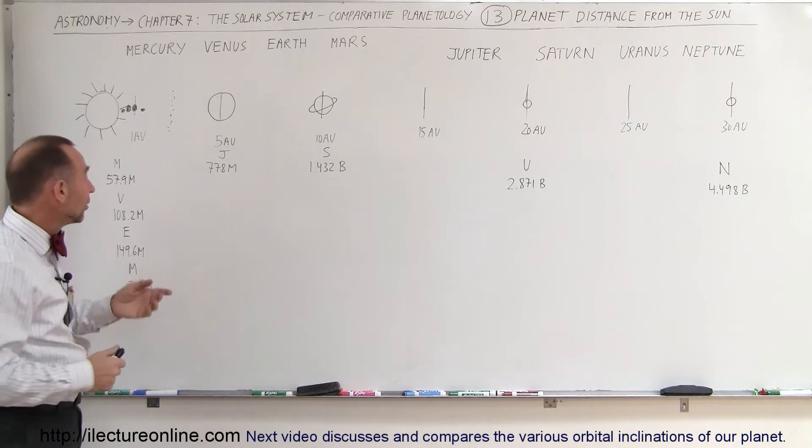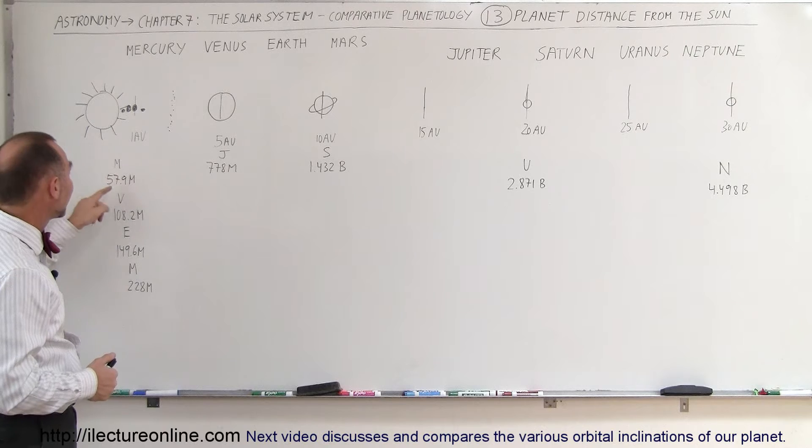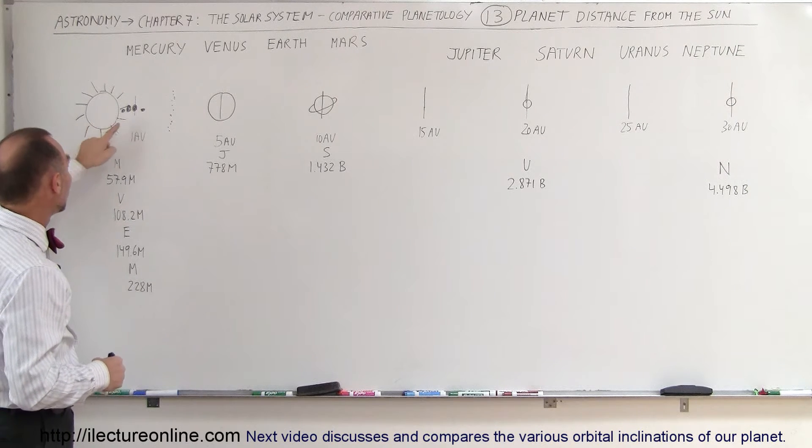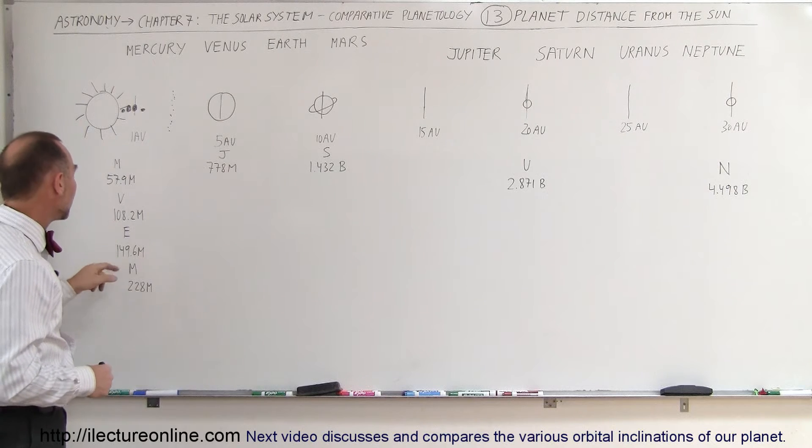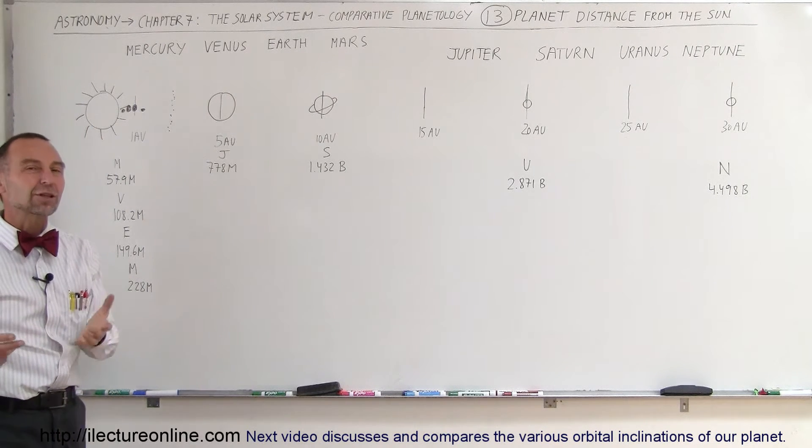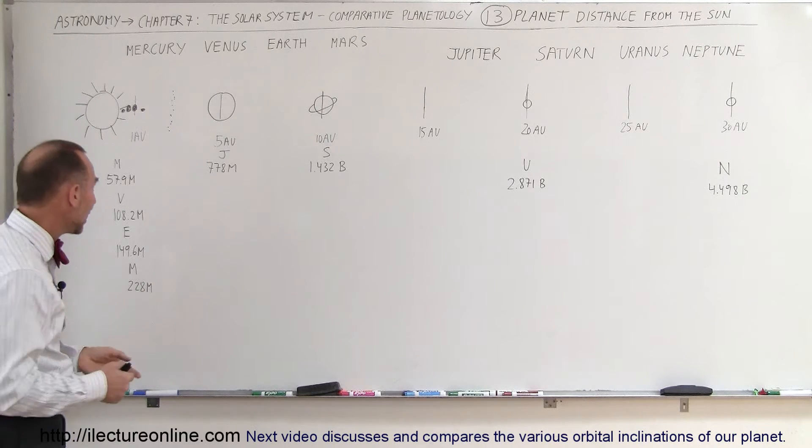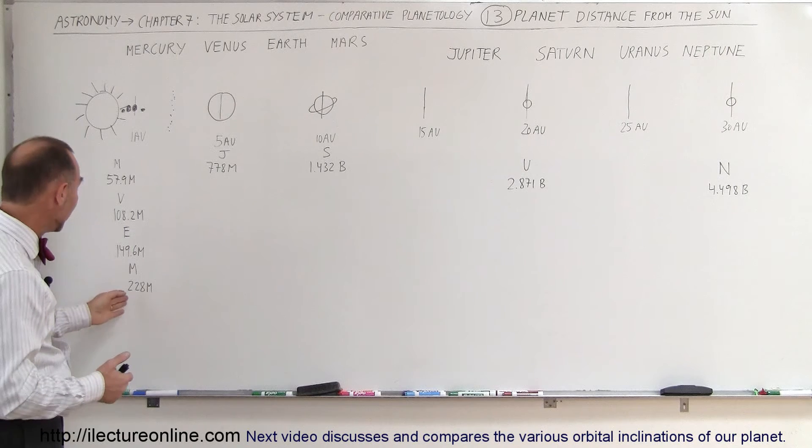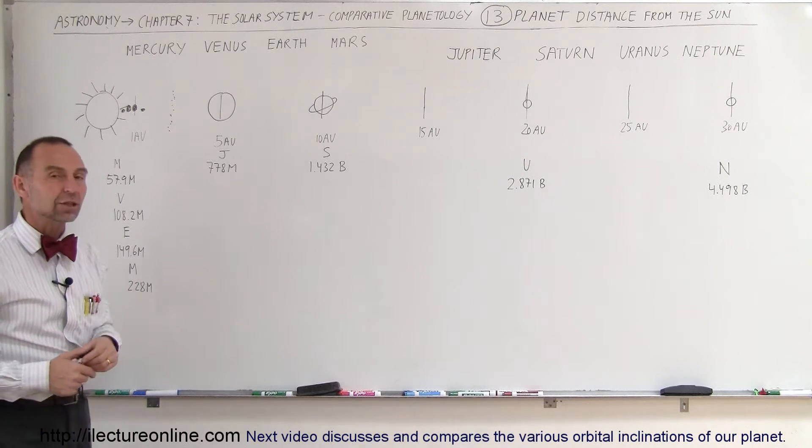In terms of kilometers, the distance from the Sun to Mercury is 57.9 million kilometers. The distance from the Sun to Venus is 108 million kilometers, and the distance from the Sun to the Earth is about 150 million kilometers, or 93 million miles. And finally, the distance to Mars, the last terrestrial planet, is 228 million kilometers.